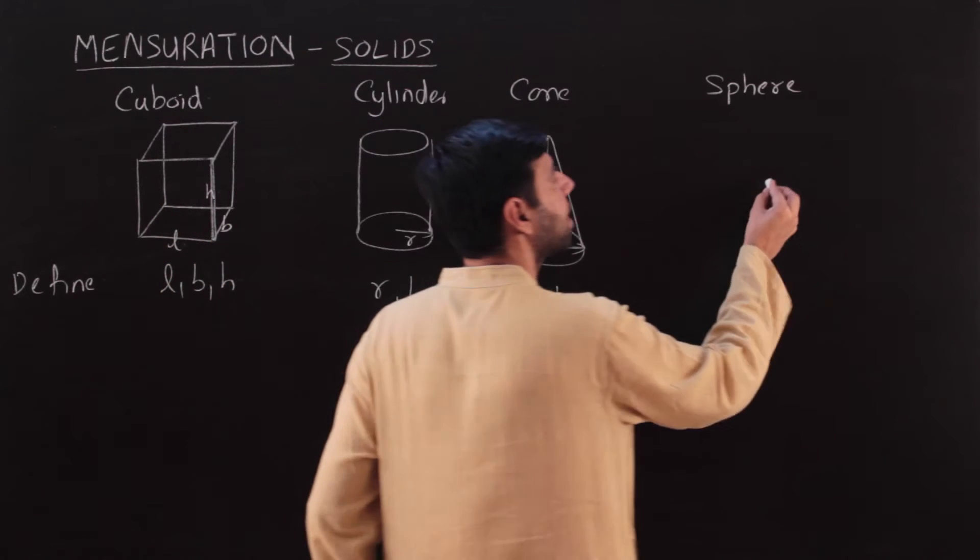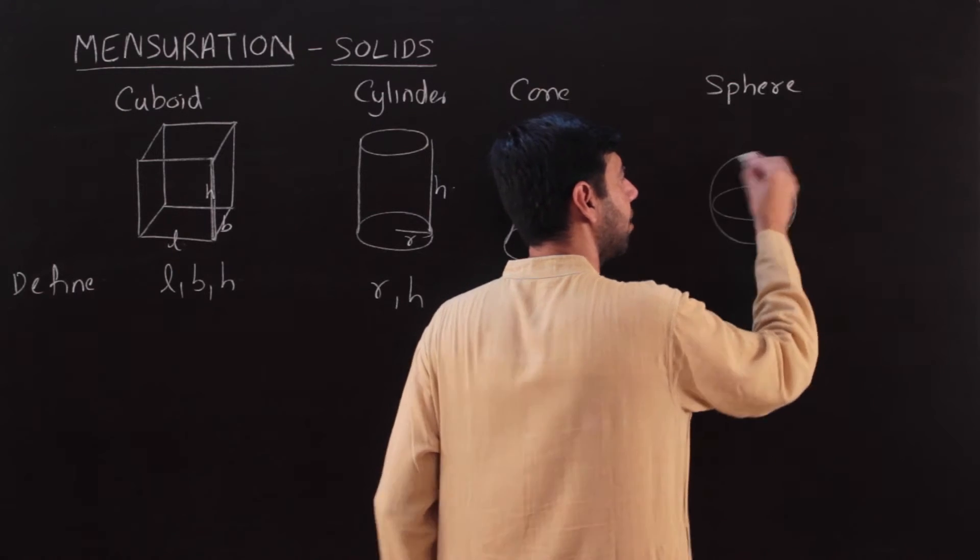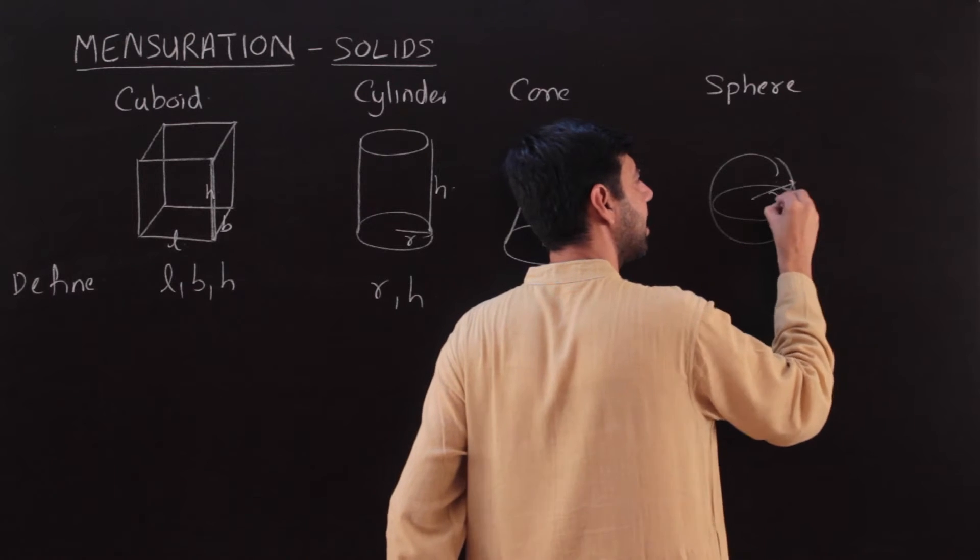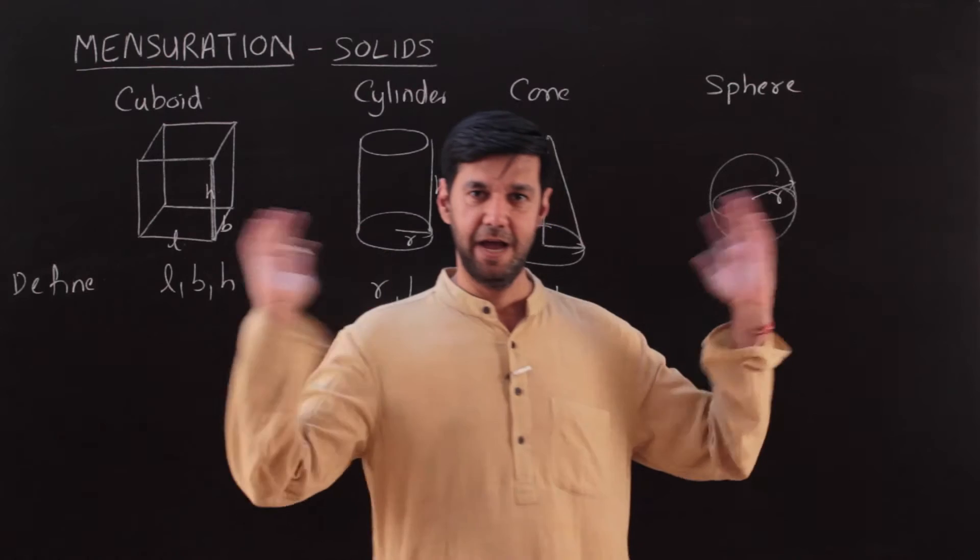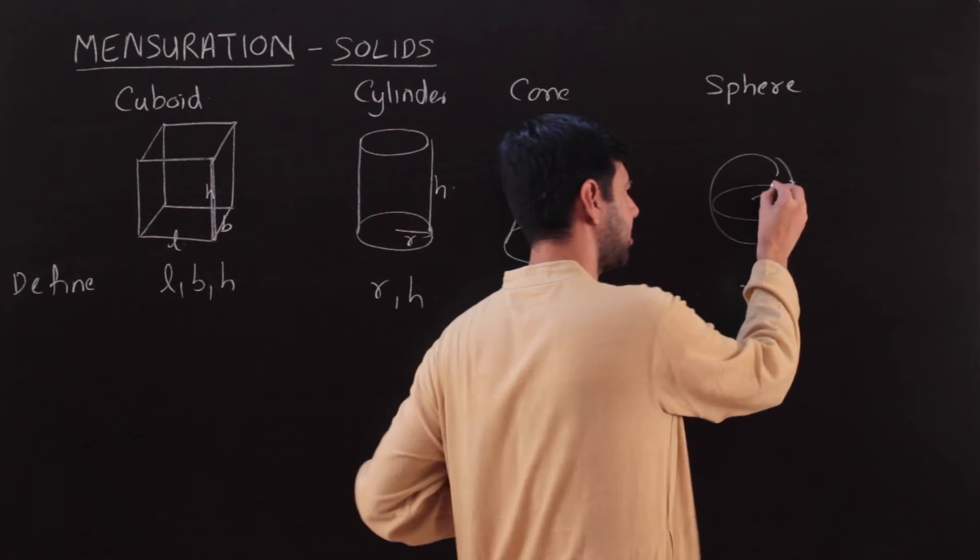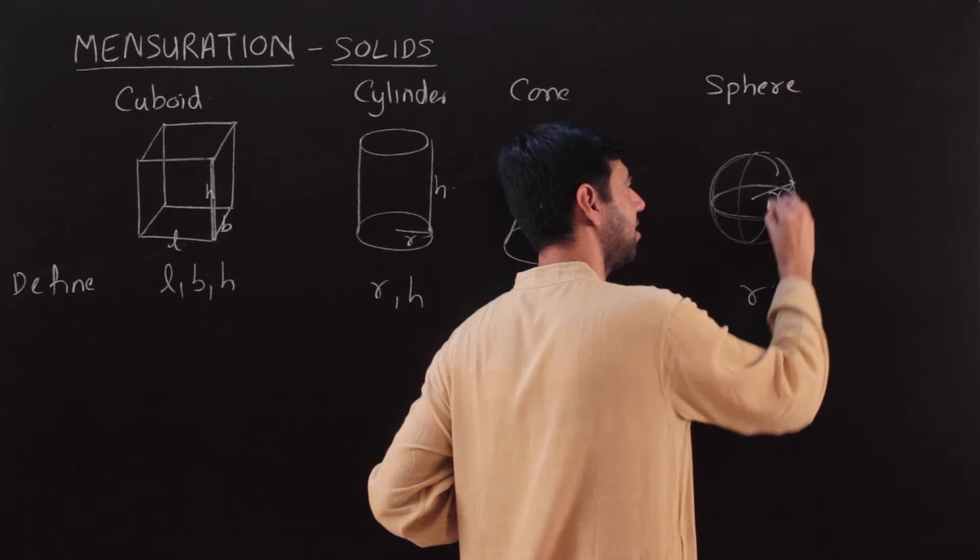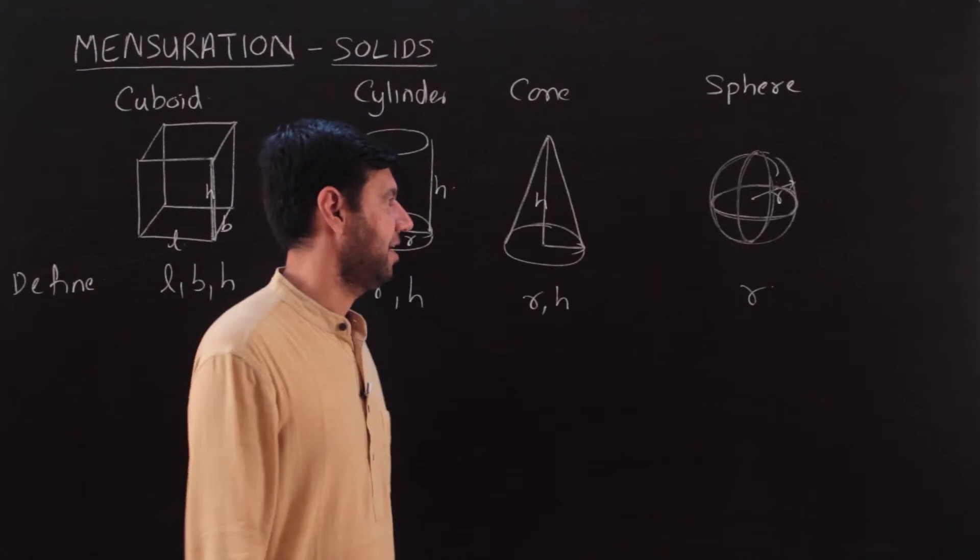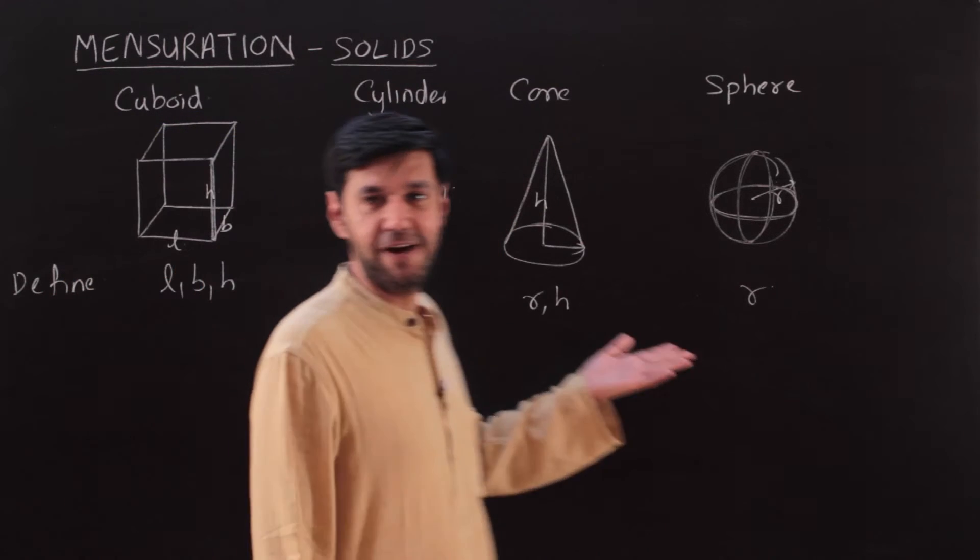A sphere is a spherical ball, a rubber ball, globe that you see. What I need to define it is just the radius and nothing else. Once I know the radius, the circle that is there is defined, the above circle is defined. All these circles are of the same radius r.